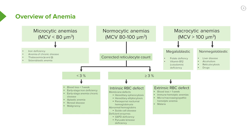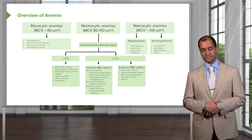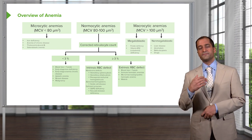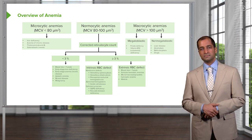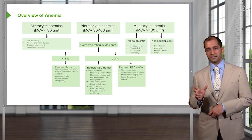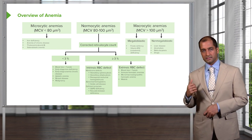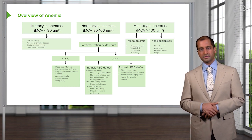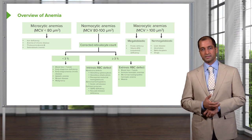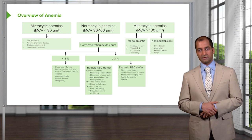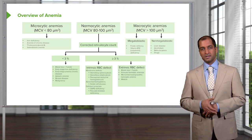There is one other concept to introduce: what current practice calls the reticulocyte production index, or RPI — also known as the corrected reticulocyte count. If the bone marrow has been shut down, you cannot produce any RBCs, and therefore you cannot produce any reticulocytes either. So you'd expect your RPI or corrected reticulocyte count to be decreased — less than 3%.